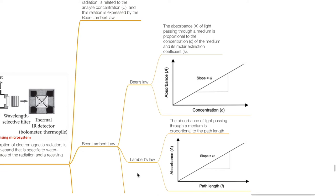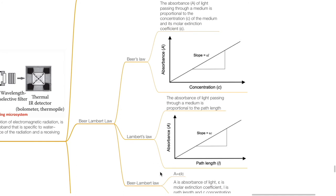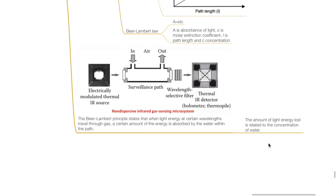The Beer-Lambert law consists of Beer's law and Lambert's law. Beer's law states that the absorbance of light passing through a medium is proportional to the concentration of the medium and its molar extinction coefficient. Lambert's law states that the absorbance of light passing through a medium is proportional to the path length. The Beer-Lambert law states that absorbance equals molar extinction coefficient (ε) times path length (L) times concentration (C). The Beer-Lambert principle states that when light energy at certain wavelengths travels through a gas, a certain amount of energy is absorbed by the water within the path, and the amount of light energy lost is related to the concentration of water in that sample.